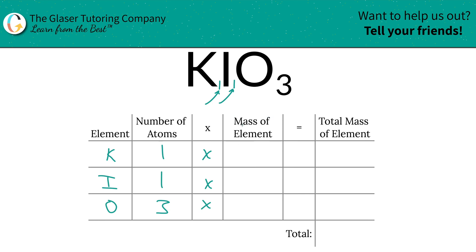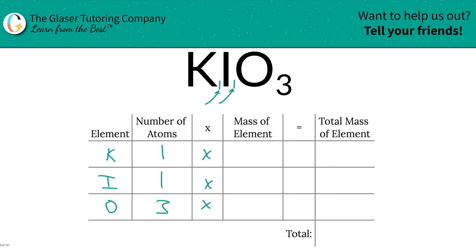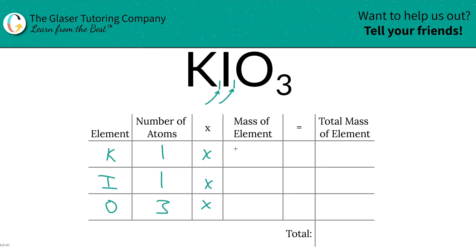Then we simply multiply the number of atoms by the mass of each element. Those masses are found on the periodic table. Potassium is 39.1, iodine is 126.9, and oxygen is 16. So we write them in: potassium is 39.10, iodine is 126.90, and oxygen is 16.